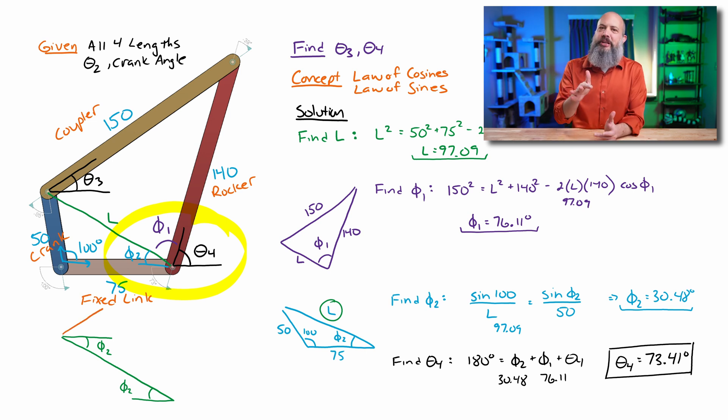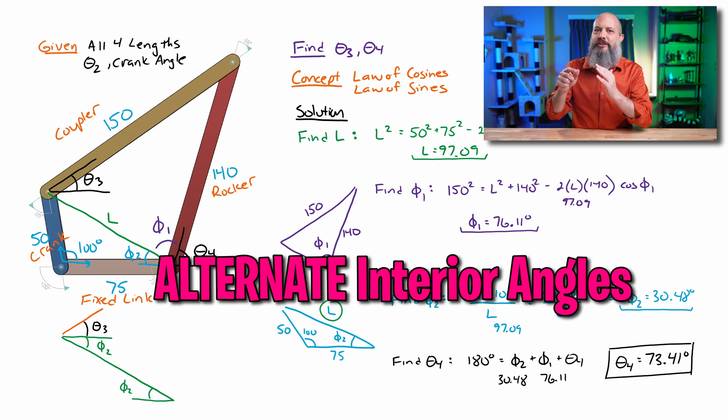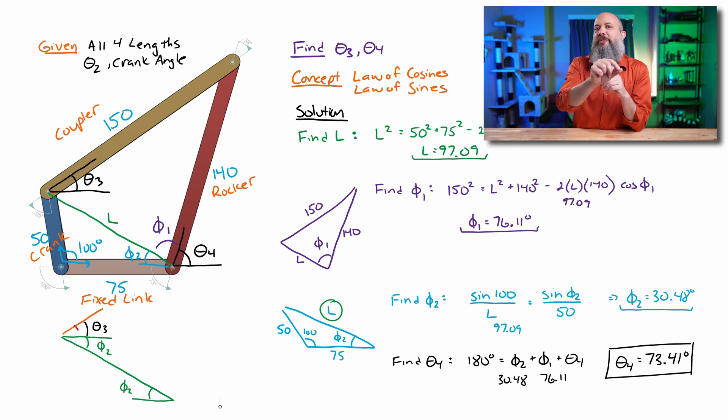Because unfortunately, theta 3 is sort of part of one of the interior angles. It's not outside the device like theta 4. But there is something kind of cool that you can see that phi 2, which is the interior angle on that lower triangle. Based on this rule, I think it's called like opposite interior angles, this phi 2 down on the bottom is also equal to phi 2 on the top. That is, theta 3 is above the x-axis between the x-axis and the 150, and phi 2 is below the x-axis between the x-axis and L.